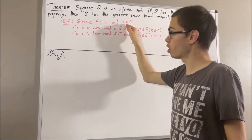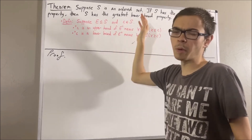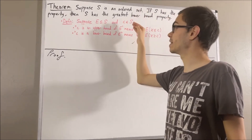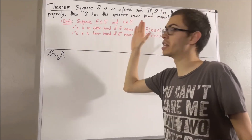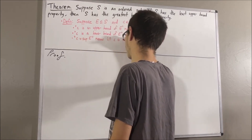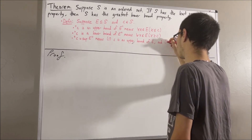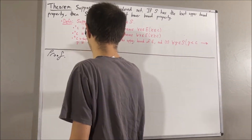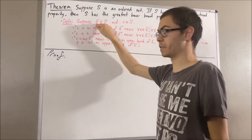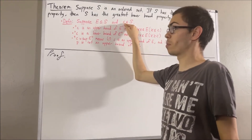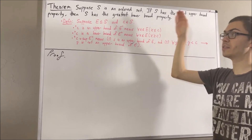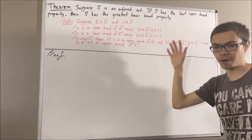To say that C is the supremum of E means C is an upper bound of E, and for all gamma in S, if gamma is less than C, then gamma is not an upper bound of E. To say that C is the infimum of E means C is a lower bound of E, and for all gamma in S, if gamma is greater than C, then gamma is not a lower bound of E.